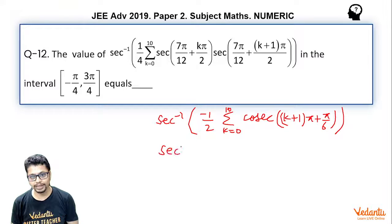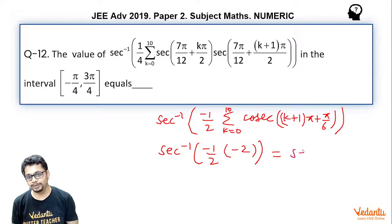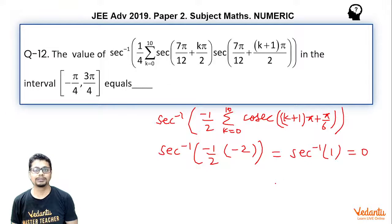Essentially what you get is sec inverse minus half times minus cosec pi by 6 which essentially is minus 2. So, this essentially becomes sec inverse 1 which is 0 which is our answer.